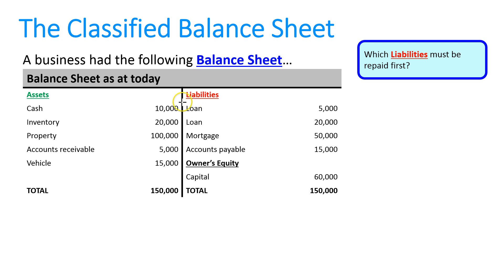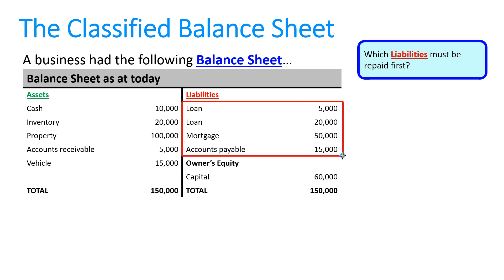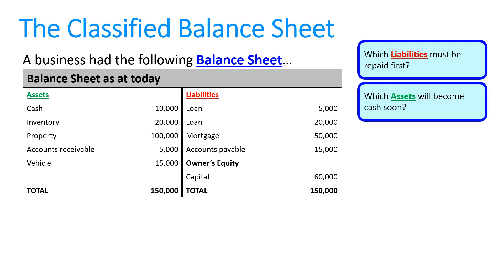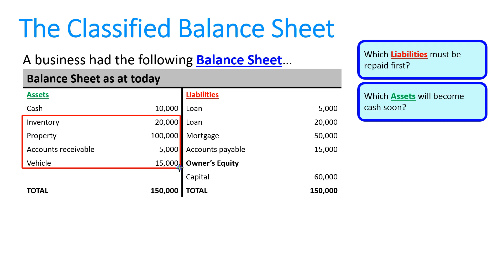When we look at these, it doesn't say which ones are due soon and which ones are due not as urgently. Secondly, which assets will become cash soon? Well, obviously cash is already cash, but will these ones here become cash soon or are we planning to hold onto them for many years?